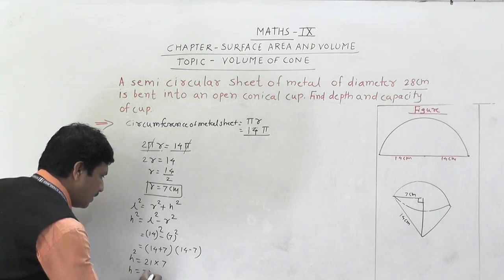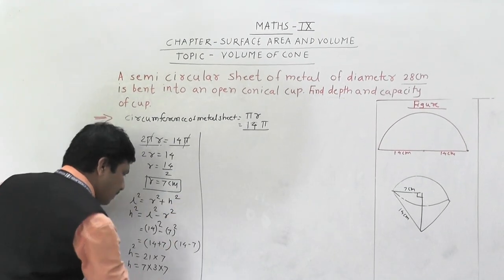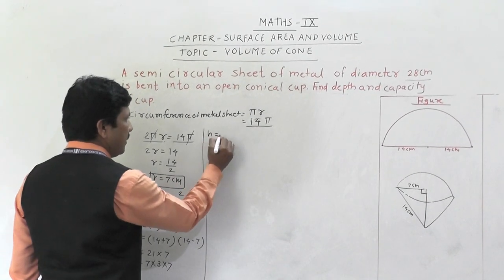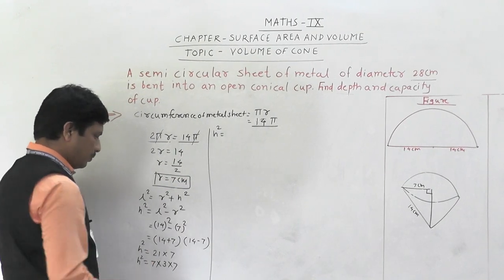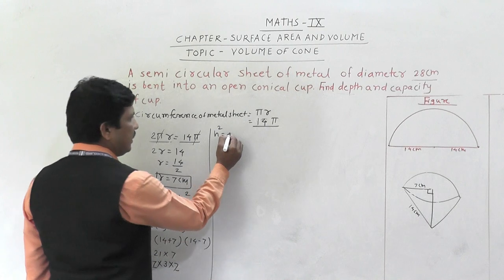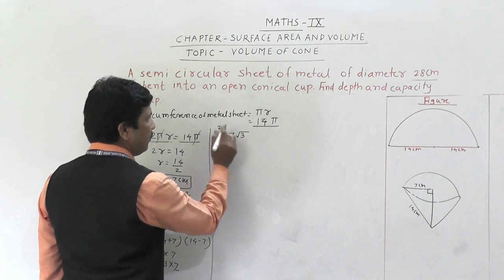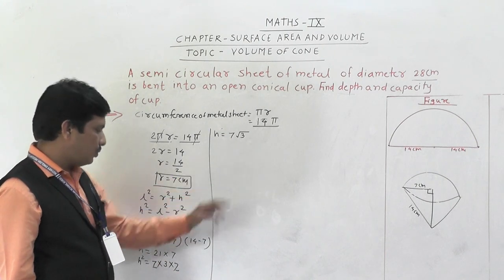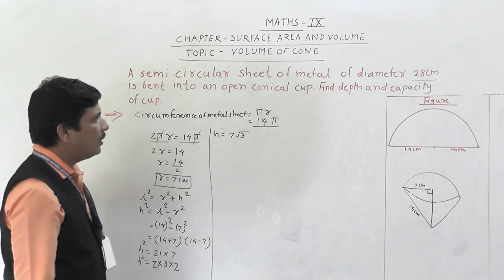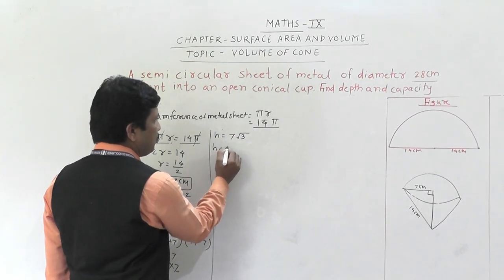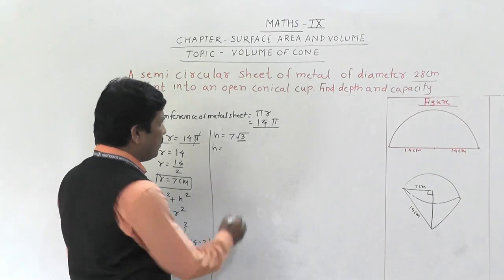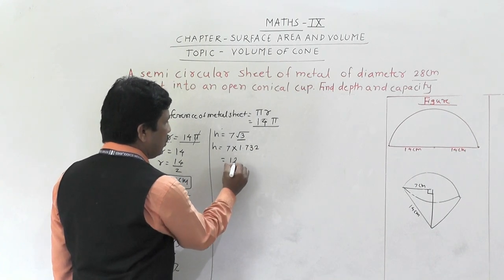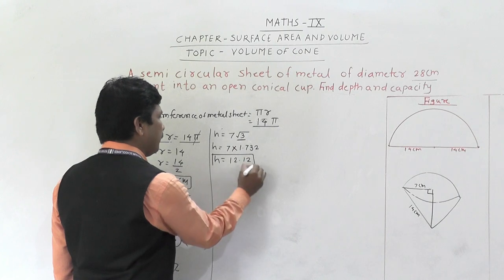We can take 7 out of the square root since it appears twice, leaving √3 under the root. So h = 7√3. Since √3 = 1.732, we get h = 7 × 1.732 = 12.12 centimeter. So the height (depth) of the cone is 12.12 cm.